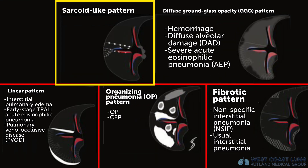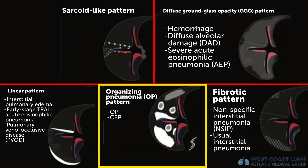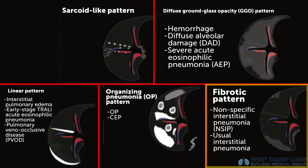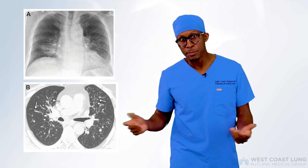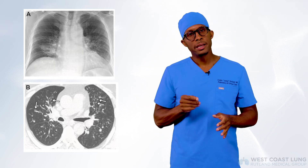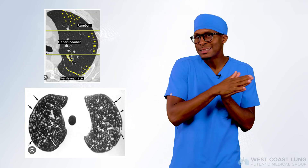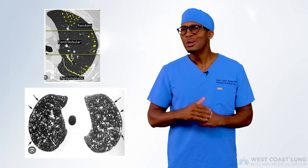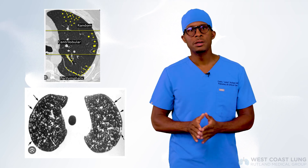Let's go through these patterns. The sarcoid-like pattern shows increased attenuation along areas where lymphatics travel — peribronchiovascular, next to the bronchi and pulmonary artery, and subpleural — along with interlobular septal thickening. The second pattern is the centrilobular ground glass nodule pattern: ground glass nodules that appear gray are located in the center of the secondary pulmonary lobule.